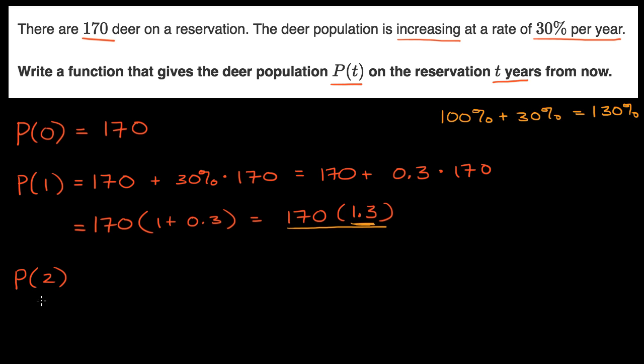So what is the population after two years? Well, you would start that second year with the population at the end of one year. So it's going to be that 170 times 1.3. And then over that year, you're going to grow by another 30%.